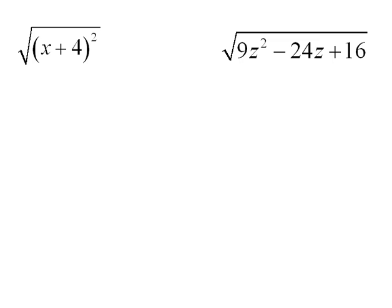Alright, now using this idea of absolute value, we need to simplify these also. Here we have the square root of x plus 4 quantity squared. So absolutely, squaring and square rooting are opposite operations—they undo each other.